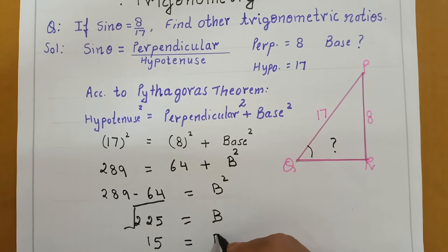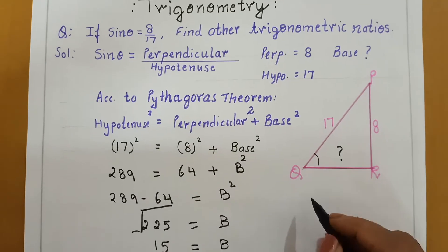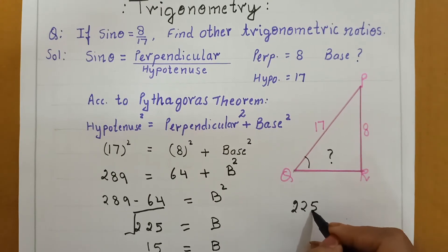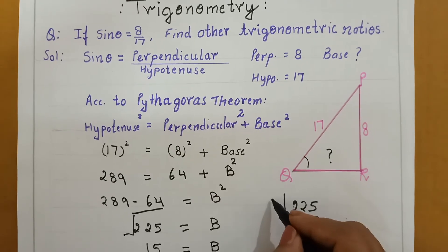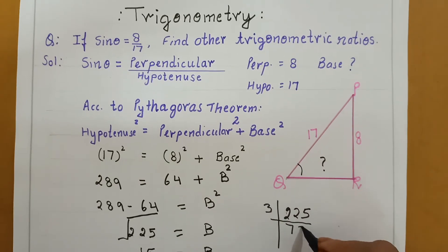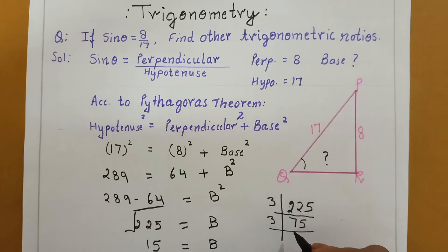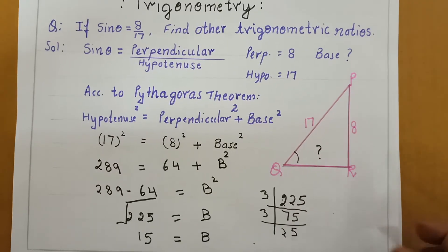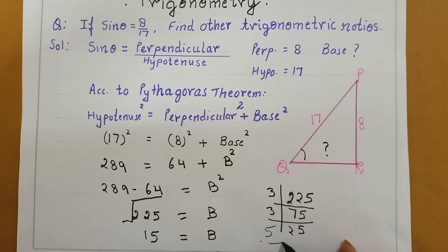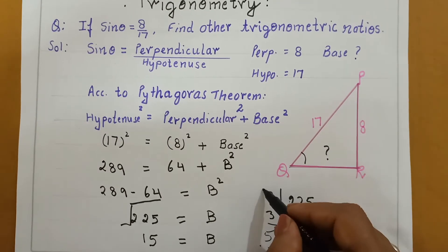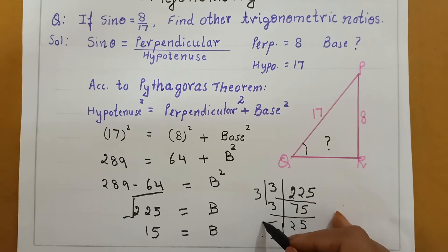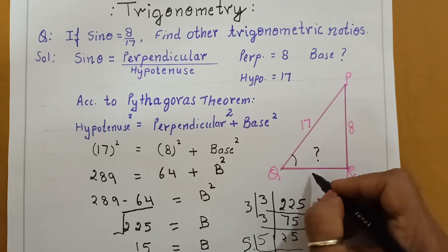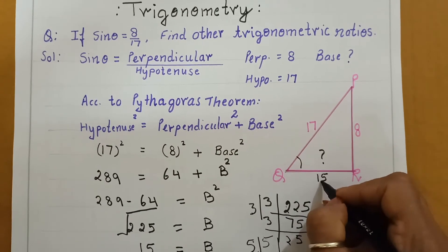And all of you know how to calculate the square root. If you don't know then I am explaining now. Square root of 225 — first we factor using 3, 3, then 5, 5 — so square root is 3 multiplied by 5, which equals 15. So the base is 15.